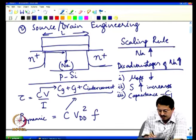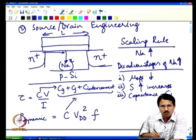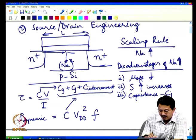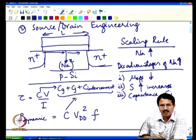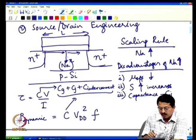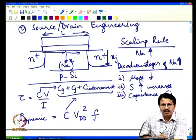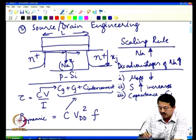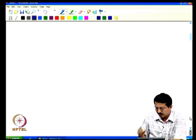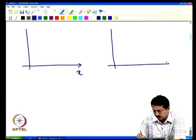Along the y-axis I go from source at y=0 to the drain at y=L (the channel length). Along the depth direction, x=0 is at the Si/SiO₂ interface, and x_j is the junction depth — the x-coordinate at which the junction is formed. We then look at the doping concentration along both the x and y axes.